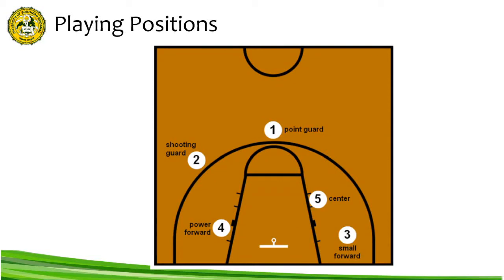The descriptions of playing positions are flexible. For most teams today, the shooting guard and small forward have very similar responsibilities and are often called wings, while the power forward and center are often called post players. Most teams describe two players as guards, two as forwards, and one as a center. The point guard, or number one, is usually the fastest player on the team, organizes the team's offense by controlling the ball, and makes sure it gets to the right player at the right time.